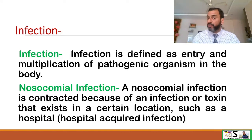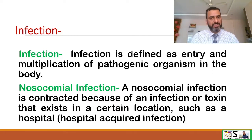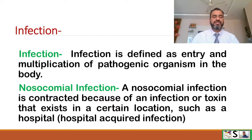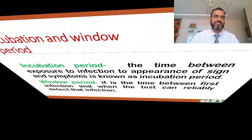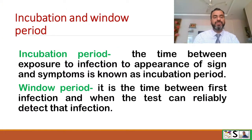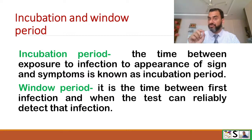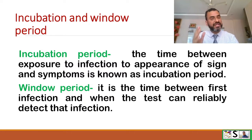Now we will discuss some important terms. Infection is defined as entry and multiplication of a pathogenic organism in the body. Nosocomial infection is contracted because of an infection or toxin that exists in a certain location such as a hospital, and it is also known as hospital-acquired infection. The incubation period is the time between exposure to the infection and appearance of signs and symptoms. The window period is the time between first infection and when the test can reliably detect the infection, or the appearance of antibodies in the blood.